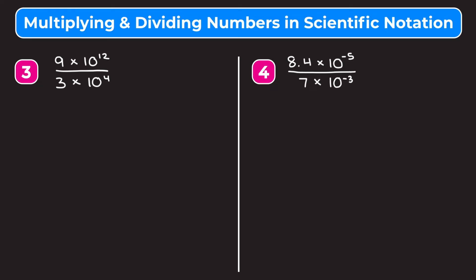Now let's go through some problems involving division. Example three is 9 times 10 to the 12th divided by 3 times 10 to the fourth. We split this into two fractions: 9 over 3 times 10 to the 12th over 10 to the fourth. Nine divided by 3 is 3, and when dividing exponent terms with the same base we subtract exponents: 12 minus 4 is 8, giving 10 to the eighth. So our answer is 3 times 10 to the eighth.